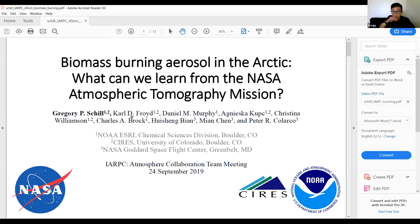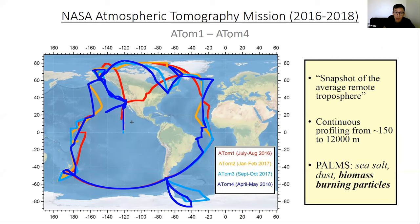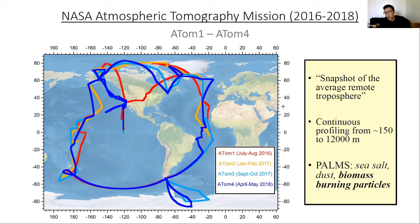ATom is the NASA Atmospheric Tomography mission. It spans two to three years and is one of the large EVS-2 proposals that was funded. The main idea is to get a snapshot of the average remote troposphere. We fly down the Pacific and up the Atlantic, continuously profiling from about 150 meters off the ocean surface to about 12 kilometers. We did this four times — nominally once for each season — to get seasonal information. Our team was responsible for running the PALMS instrument.